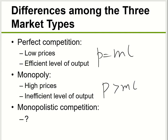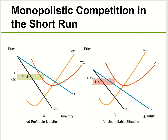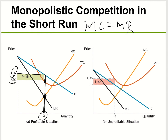For monopolistic competition in the short run, anything is possible. A company can make a profit, lose money, or break even. For graph A, the first thing you look for — same as for monopoly or perfect competition — is where marginal cost equals marginal revenue. Go down to get the quantity, then go up to the demand curve to find price, then to the average total cost curve. Here, price is more than average total cost, so the company is making a profit.